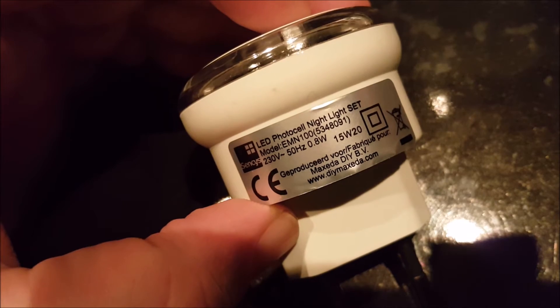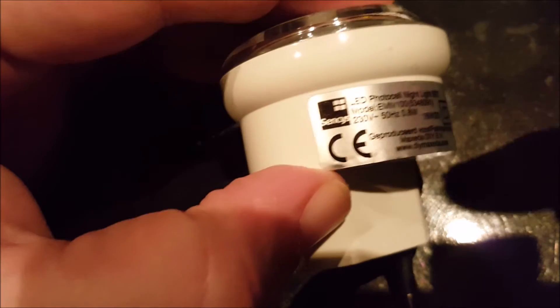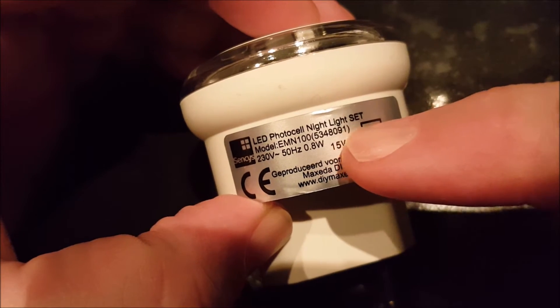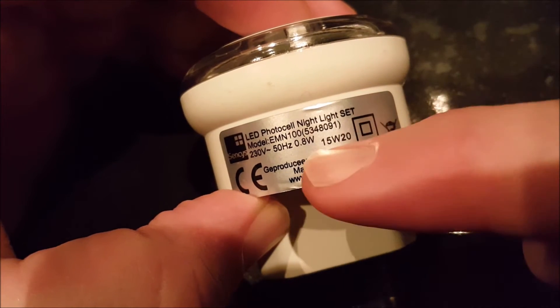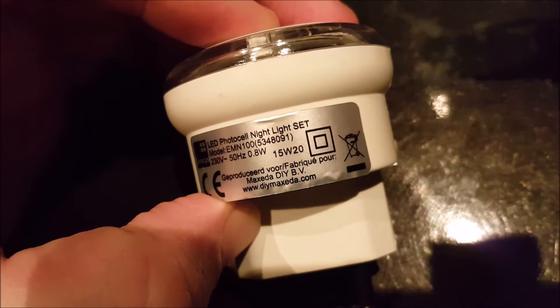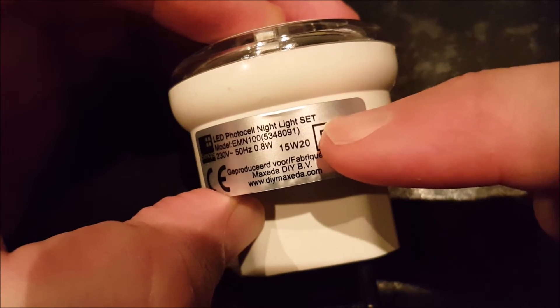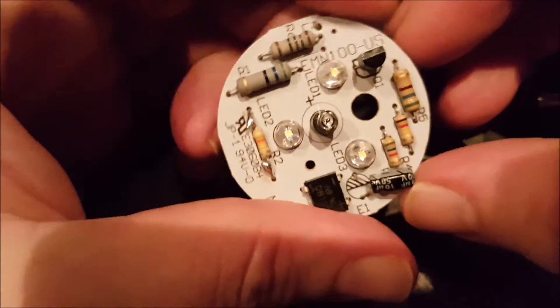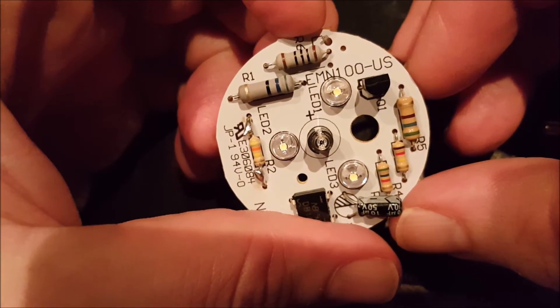So a quick update on the LED photocell nightlight set from Senkis. Here it says model number EMN100. 0.8 watt. 15W20. That's a rating for motor oil. But then again, the product number I found that here on the board. EMN100 dash US.